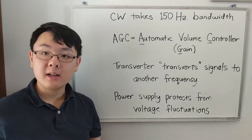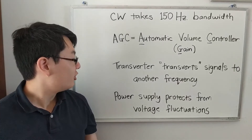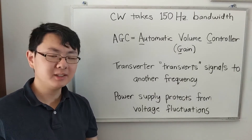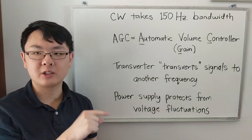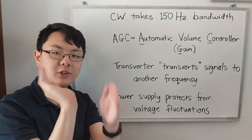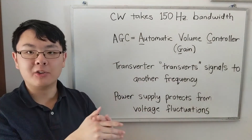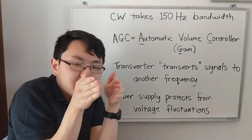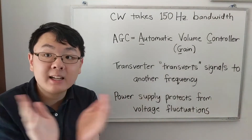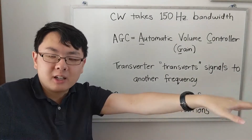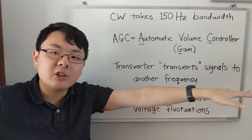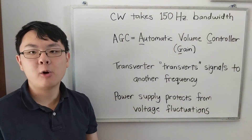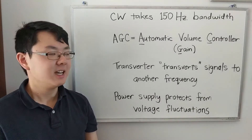Now we're going to talk about selectivity. Selectivity is the ability of a receiver to discriminate between multiple signals. When there are multiple CW signals in the band at once, a receiver with good selectivity selects one frequency to listen to and rejects all other signals — it discriminates or selects between signals.